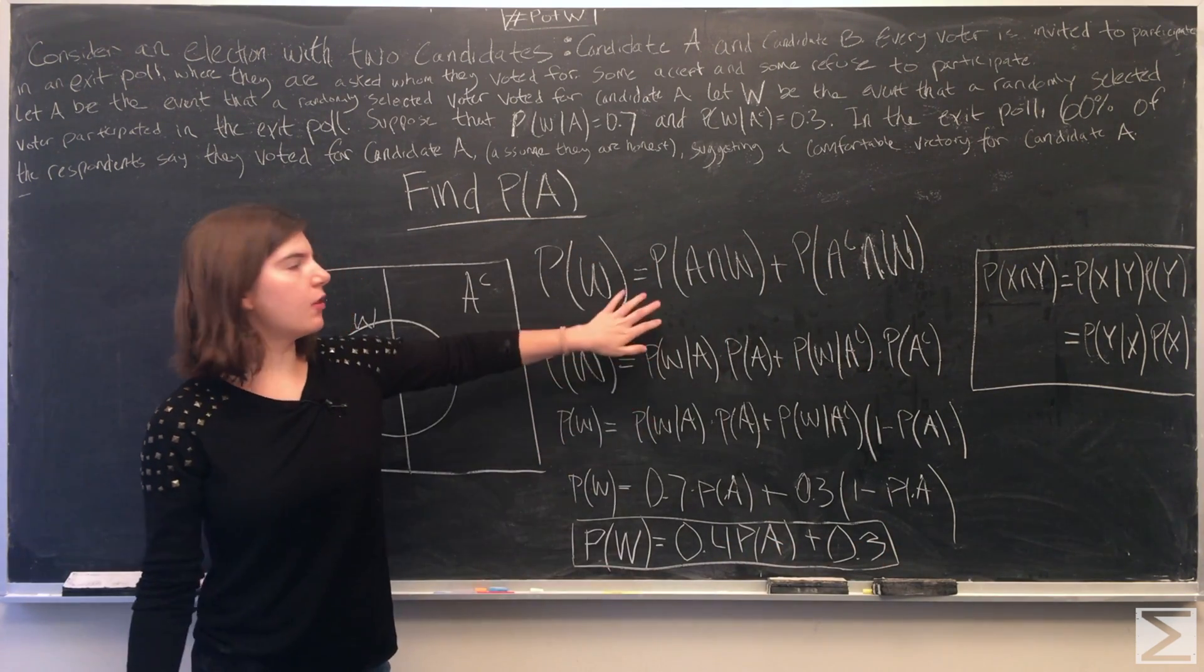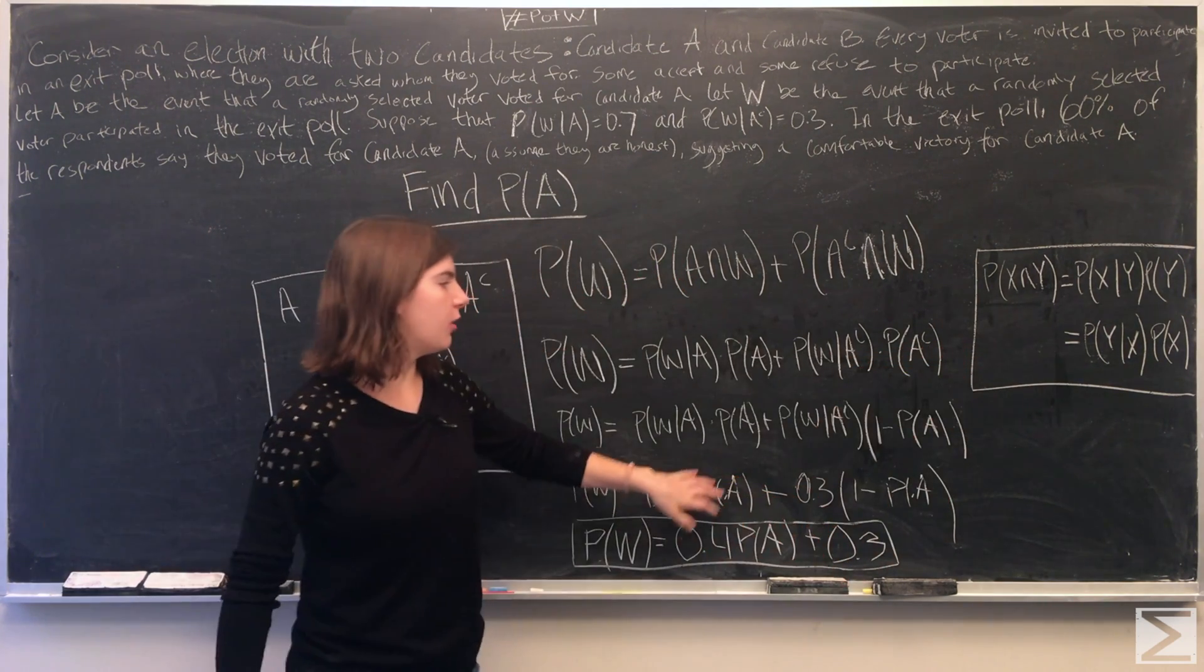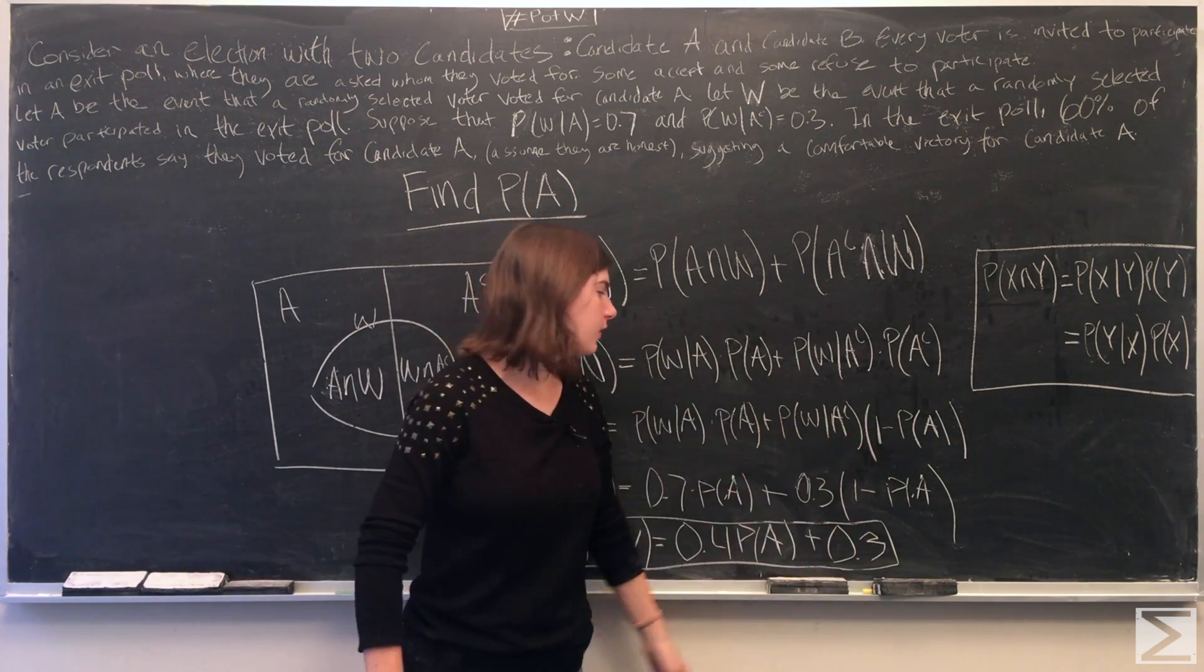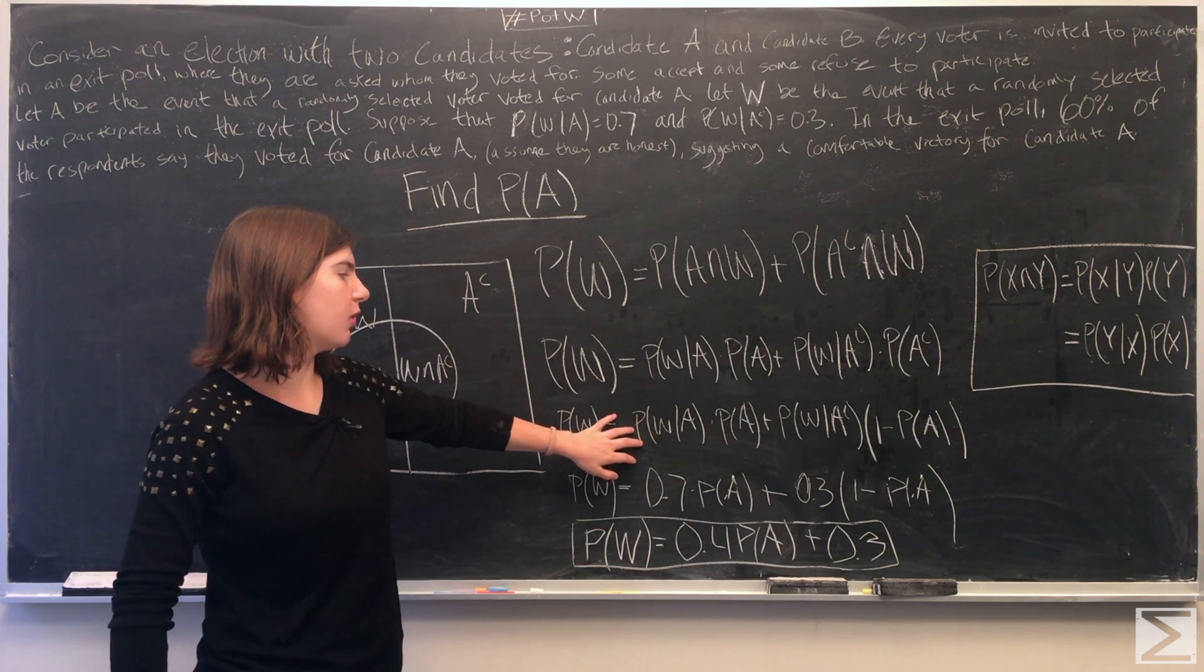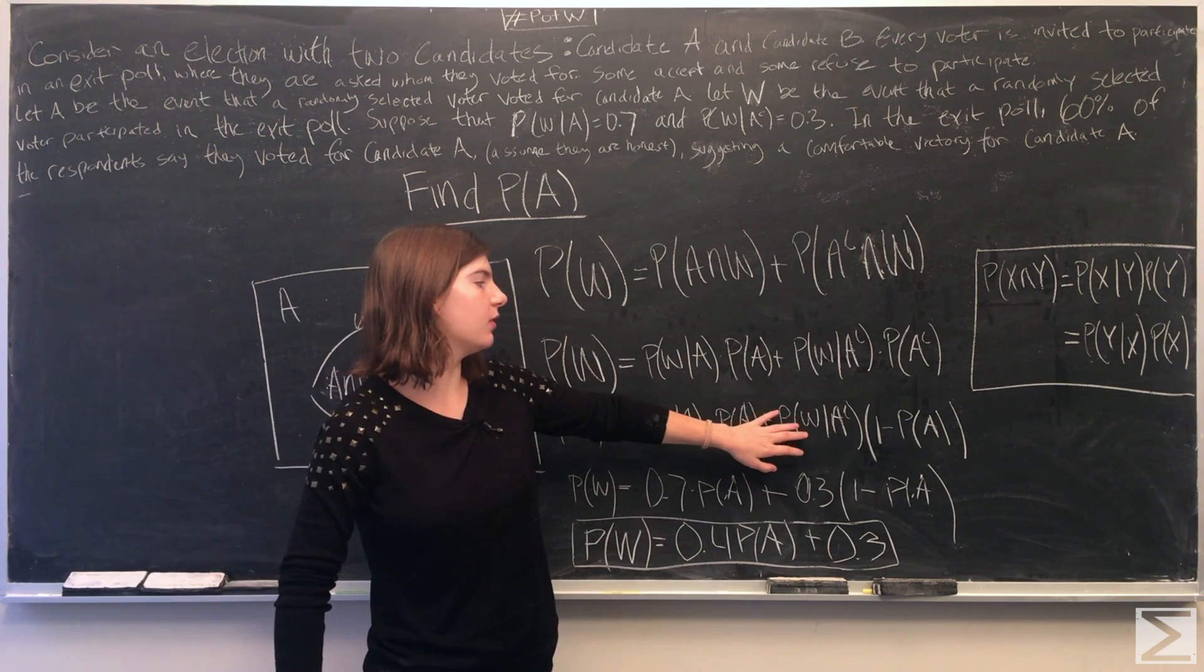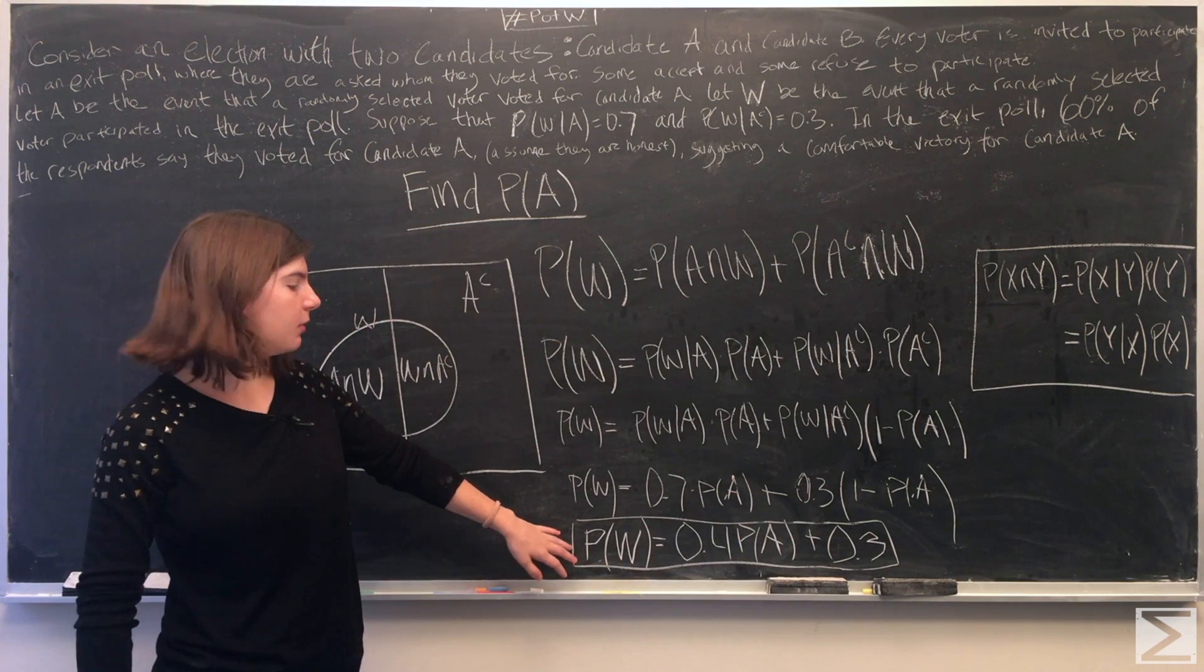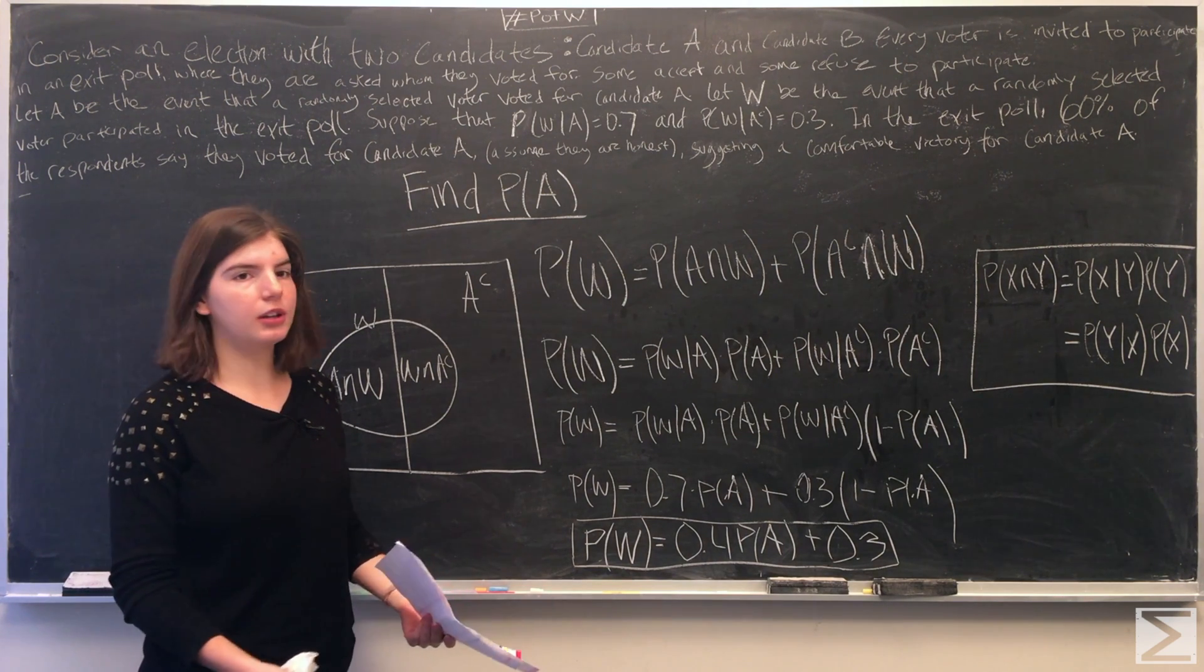So we rewrote this equation using this rule. And then all we did in this step was we wrote the probability of A complement as one minus the probability of A. And then we substituted our values. So we are given the probability of W given A is 0.7 and the probability of W given A complement is 0.3. So we're left with the probability of W is equal to 0.4 times the probability of A plus 0.3.